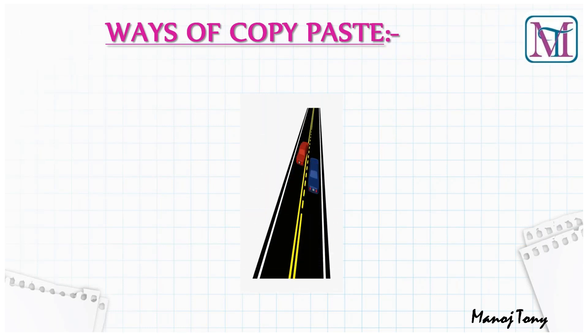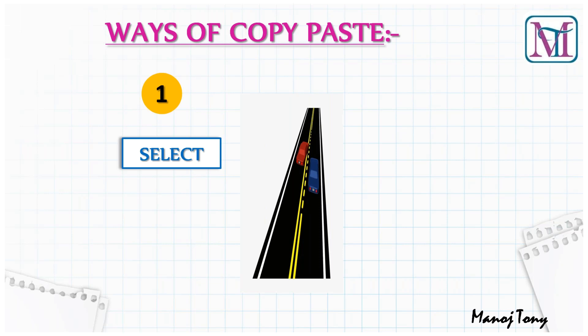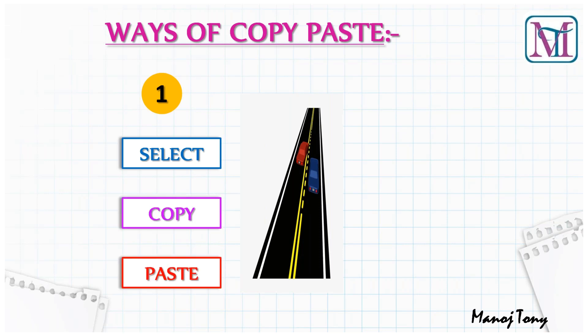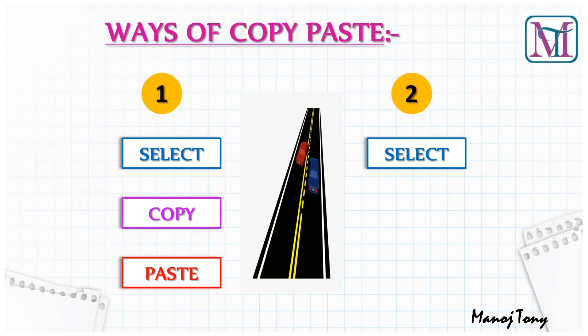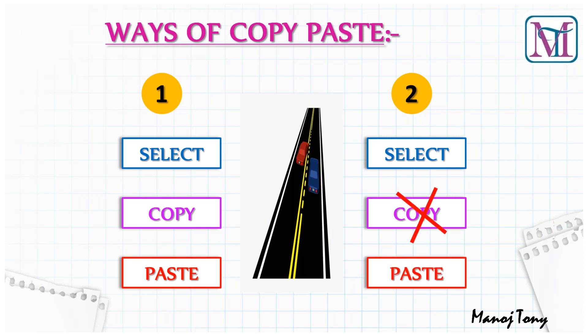So, ways of copy paste. The normal process: first we select the entries, then Control C, then paste. But sometimes the selection deselects when we copy. That's why I will show you another functionality where you just select and paste — no need to go for copy. This process is more user friendly. When you select that entry, at the same time that entry will be copied, so you can directly paste those entries into Excel sheet or Notepad.